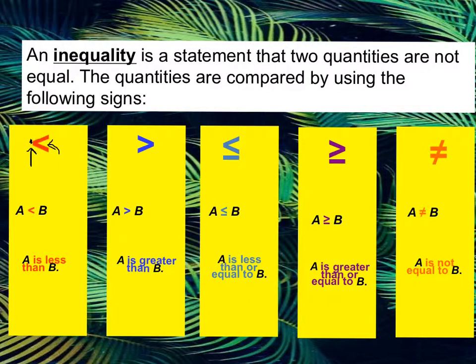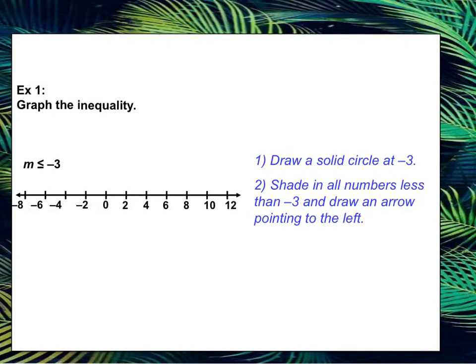Let's look at a few examples where we have to write inequalities and graph them. Here's our example number one. We are going to graph the inequality m is less than or equal to negative 3. Notice how I said that out loud, so I'm going to write that down: m is less than or because of the bar underneath equal to negative 3.